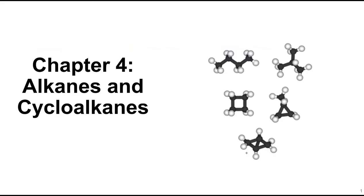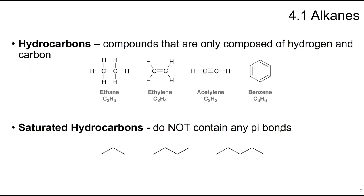Chapter 4 deals with alkanes and cycloalkanes. Alkanes are hydrocarbons, and hydrocarbons are compounds composed only of hydrogen and carbon. You can see examples with varying degrees of saturation: fully saturated ethane, then adding a double bond makes ethylene, a triple bond makes acetylene, and benzene has four double bonds. Saturated hydrocarbons do not contain any pi bonds — all single bonds only.